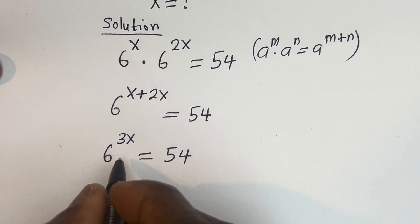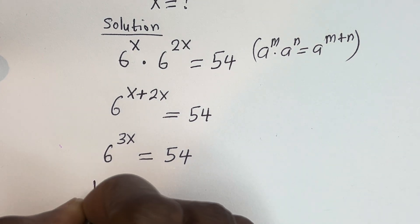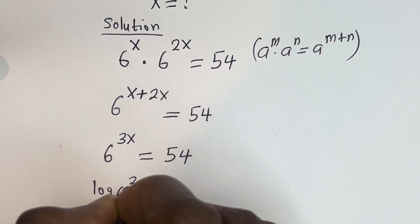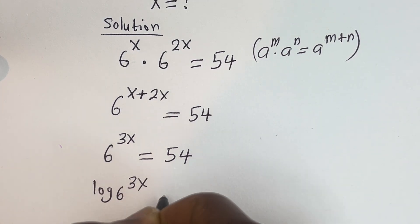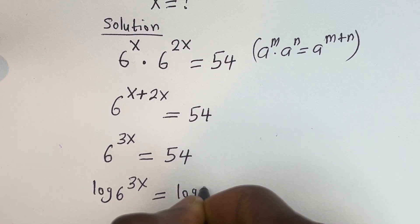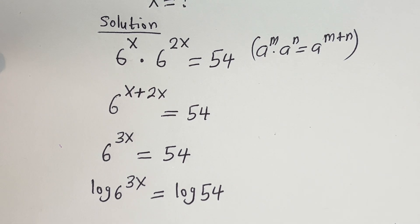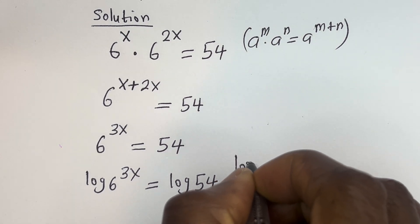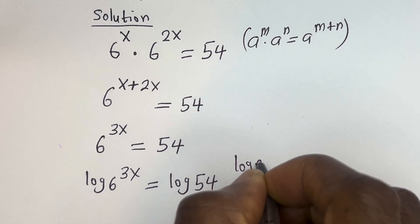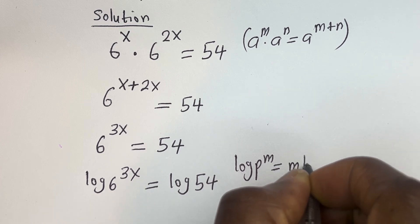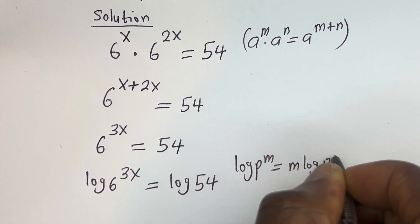Now we take the log of both sides. We have log of 6 to the power of 3x is equal to log 54. Take note that if you have log p to the power of m, this is equal to m log p.